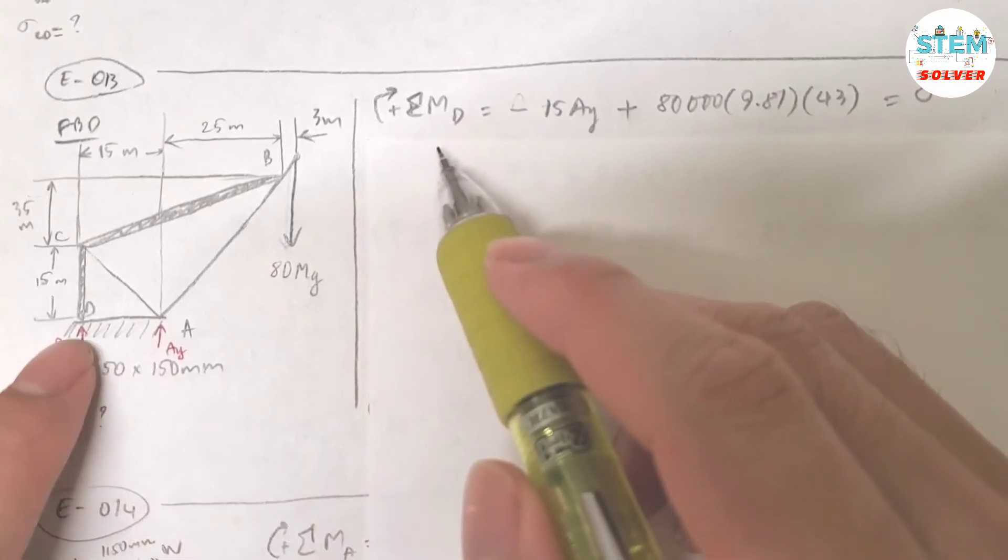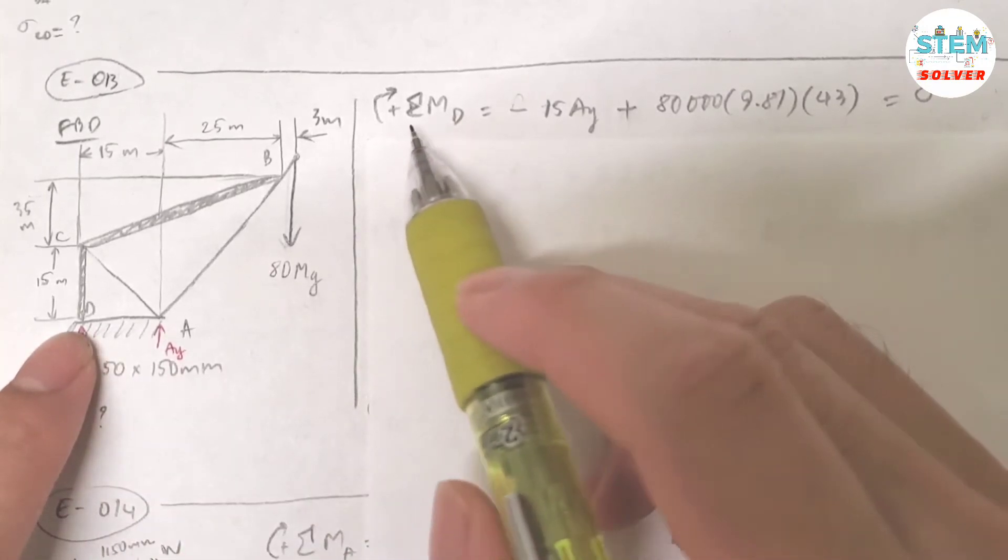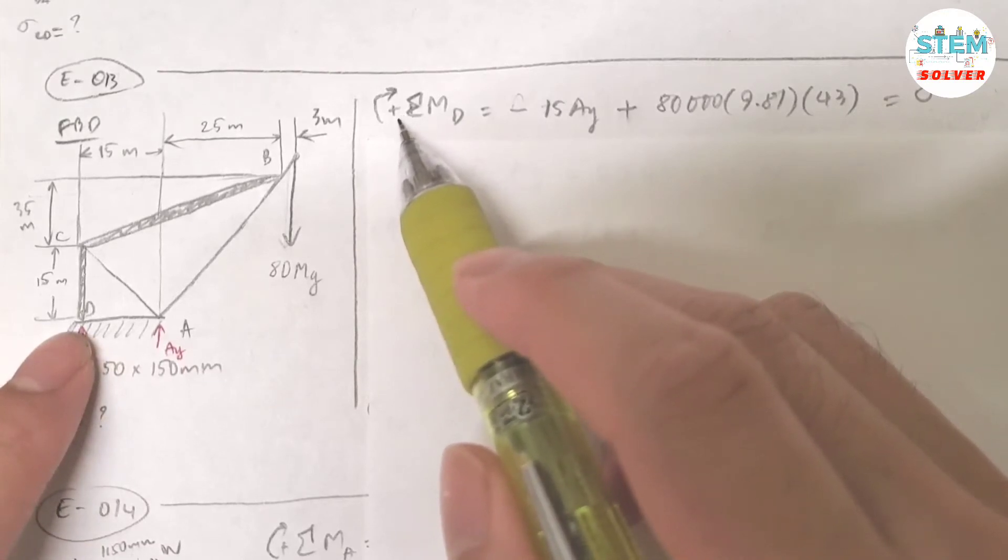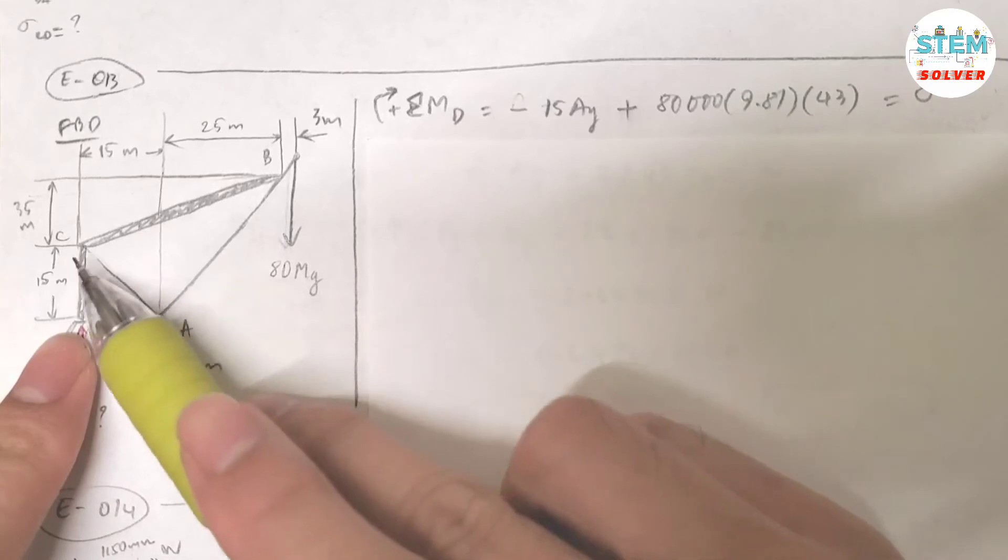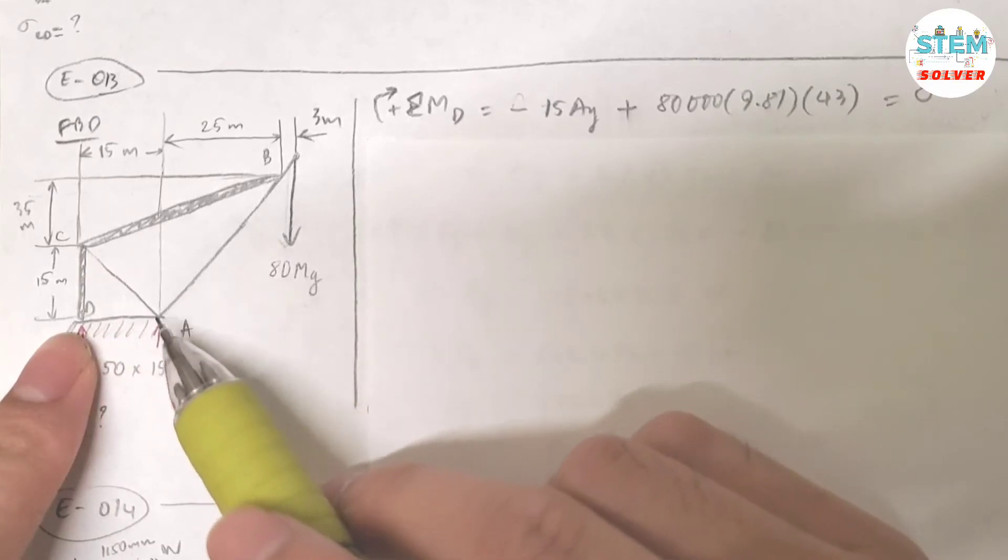So I took the moment about point D, assuming that clockwise is the positive direction. So I have the distance from here to here is 15. This force is counterclockwise, so I have negative 15 times AY.